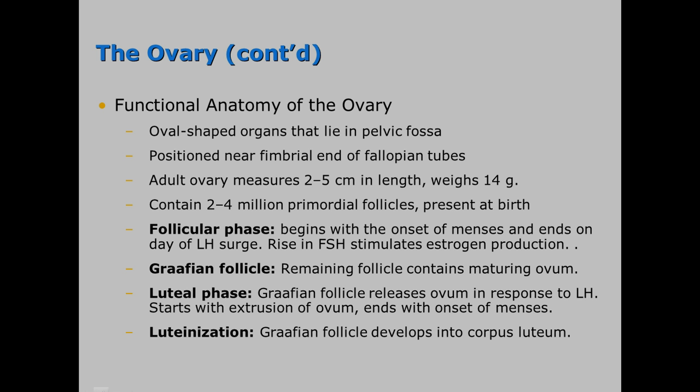Regarding the functional anatomy of the ovary: there are two ovoid organs located in the pelvic fossa, positioned near the end of the fallopian tubes. Each one is about two to five centimeters in length, weighs about 14 grams, and they contain two to four million primordial follicles, which you actually have at birth.